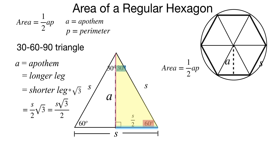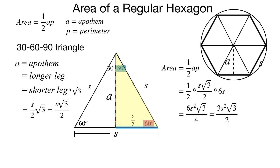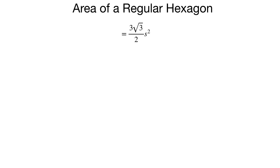The area is one half AP — one half times the apothem times the perimeter, as we've proven. Plugging in: one half times S√3 over 2, times the perimeter 6S (since each of 6 sides has length S). Multiplying numerators gives 6S² times √3; multiplying denominators gives 4. So 6 over 4 reduces to 3S²√3 over 2, which is the same as 3√3 over 2 times S² — exactly the formula on the formula sheet. That is the area of a regular hexagon.